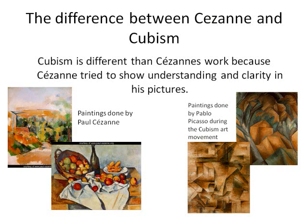Cézanne's work was seen as a connection between Courbet's realist paintings and the beginning of Cubism. Cézanne searched to create new forms and colors different from Impressionism, which was a major art movement that came right before Cubism. Impressionists moved away from realism and were interested in light and abstract ideas. However, Cézanne kept painting in realist style and was not greatly influenced by Impressionist paintings. Cubism is different from Cézanne's work because Cézanne tried to show understanding and clarity in his pictures, which Cubism does not generally do.